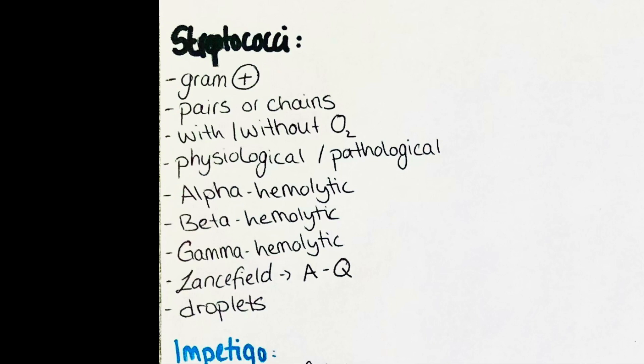Streptococci are transmitted by small droplets which are passed from one person to another by sneezing, coughing, speaking, or even singing. Direct contact with an infected wound is also a possible way of transmission, and mothers can infect their babies during birth.